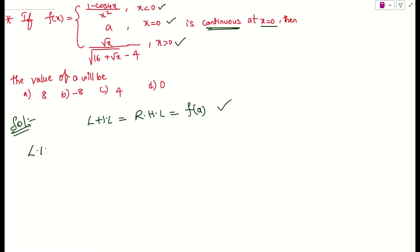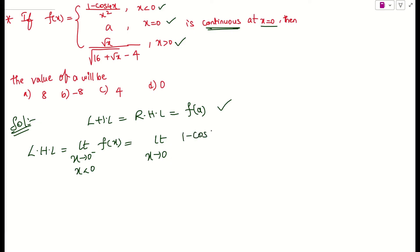Let us take the left hand limit. What is left hand limit? Limit x tends to 0 from the left hand side, meaning x less than 0, f(x). Since x is less than 0, my function will be (1 - cos4x) / x².